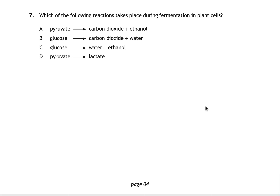Question seven asks which reaction takes place during fermentation in plant cells. The correct answer is A: in plant cells during fermentation, pyruvate is broken down into carbon dioxide and ethanol. If you chose D, you were thinking about fermentation in animal cells — but the question specifically asks about plant cells.